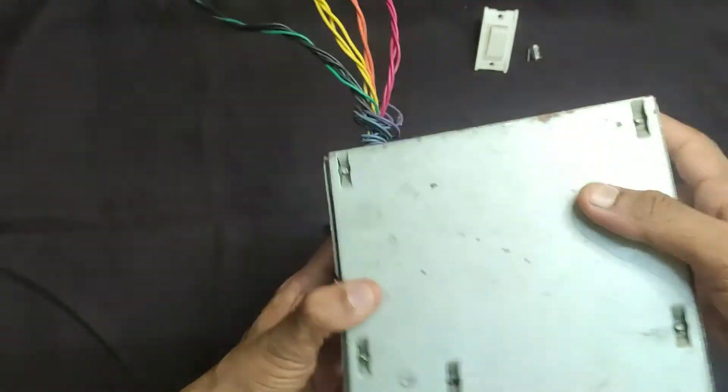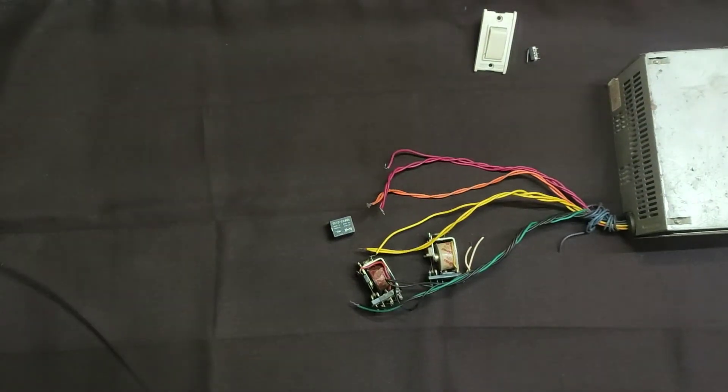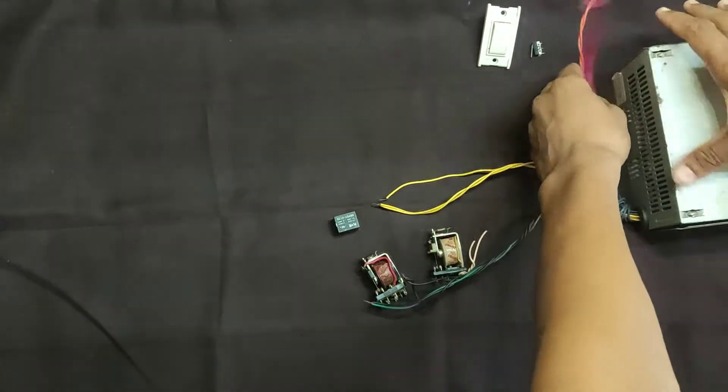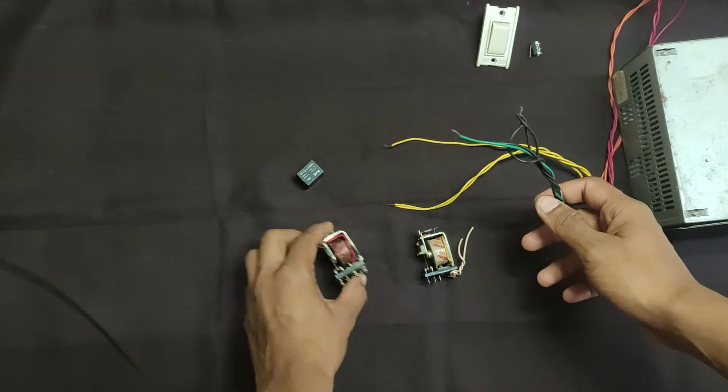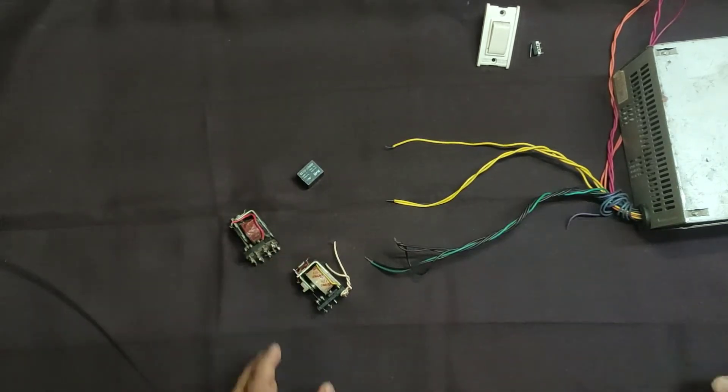It has cooling fan inside because it have to provide large current. The three relays which we have are 12 volt relays. That's why I am using yellow and ground wire. Let's see the construction and working of relay.